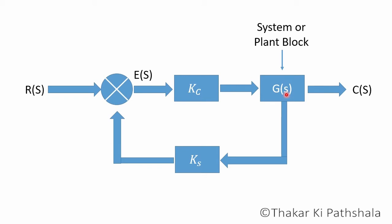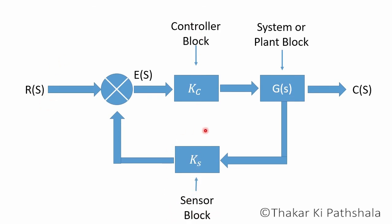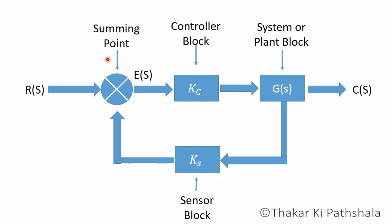This is the controller block, which controls the amount of input being fed to the plant. This is the sensor block, which sends the output and feeds that signal to the summing point — or comparator block — which then compares it with the reference. If everything is okay then no problem, but if a difference is generated between both signals, it will send an error signal to the controller block in order to increase or decrease the amount of input going to the plant.